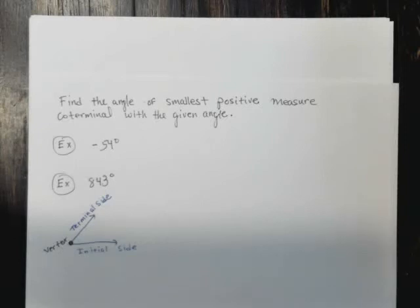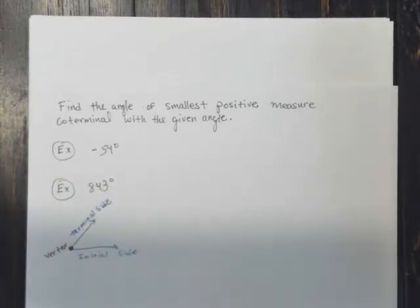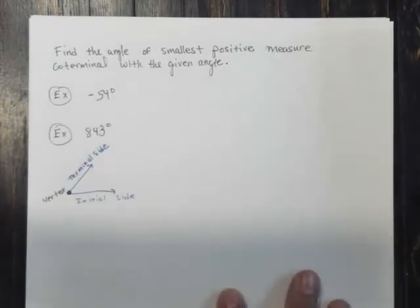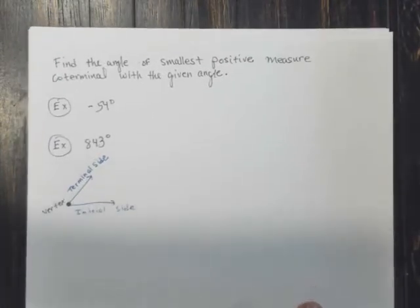In the following examples, we are asked to find the angle of smallest positive measure, coterminal with the given angle. We've got two examples. But before we even proceed, let's think about what coterminal means.